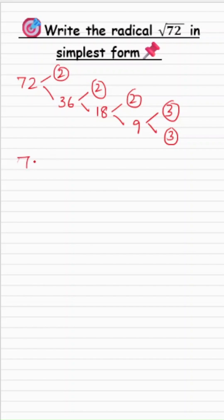So, the prime factorization of 72 is 2 times 2 times 2 times 3 times 3. Now, this is square root of 72. So, let's take square root on both sides. So, square root of 72 is the square root of this prime factorization.